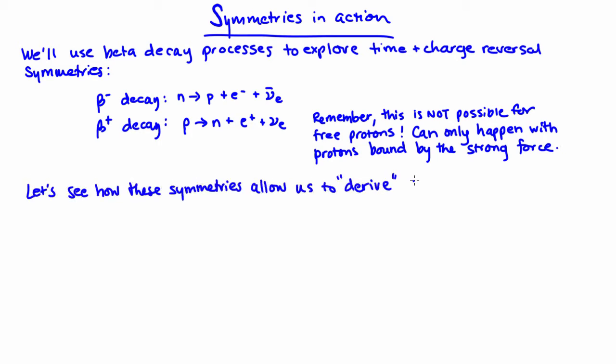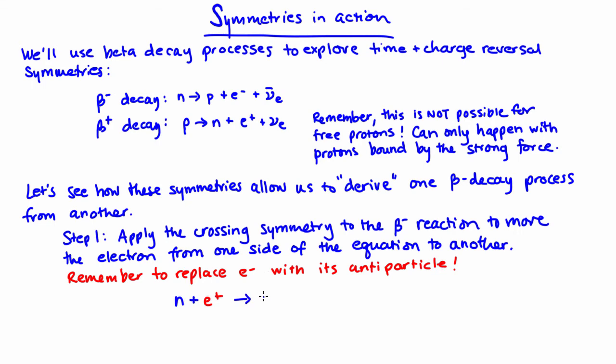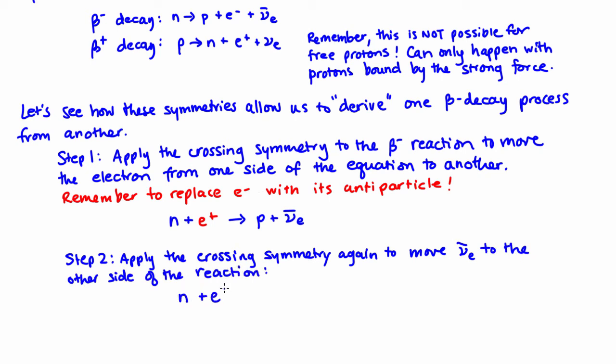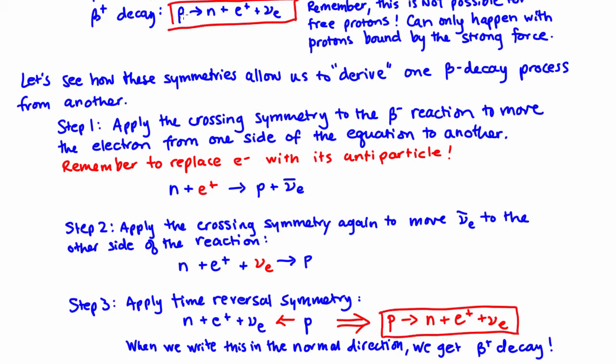Take the beta minus decay reaction as an example. You can move the electron from the right-hand side of the reaction expression to the left-hand side and replace with its antiparticle. Next we can move the electron antineutrino from the right-hand side to the left-hand side and replace it with its antiparticle. Finally you can reverse the arrow or apply time symmetry. Then you get p → n + e⁺ + vₑ. This is just the equation for nuclear beta plus decay.